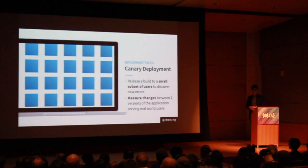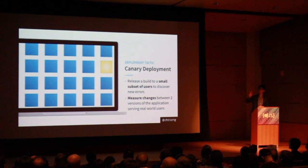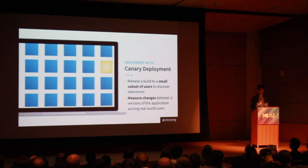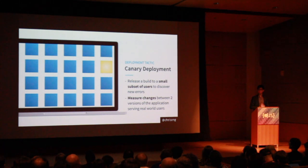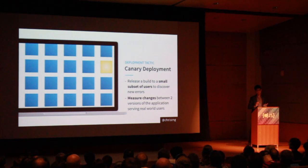Another deployment tactic we use is canary deployment. All those blue boxes represent your servers. We take one of them and deploy the new code, then compare that yellow box — the new code — against the blue boxes to see if error rates went up, if there are more JavaScript exceptions, or higher CPU usage: real-world errors you won't really encounter through manual QA or automated testing alone. It's kind of hard to catch every edge case, especially with user-generated content, so you offload that to real-world users, but not all of them.